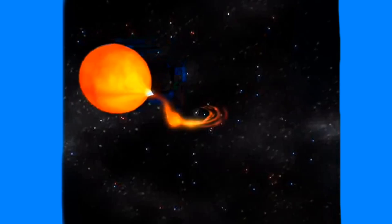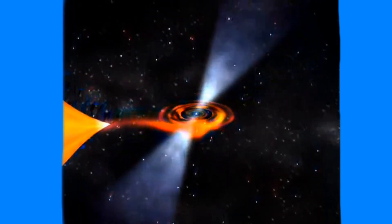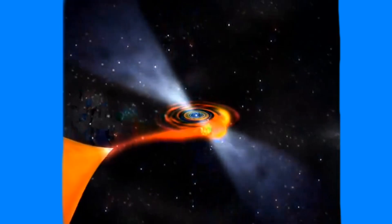Because of this, the white dwarf pulls the outer layer of the red giant towards itself with its gravity, forming an accretion disk around the white dwarf.